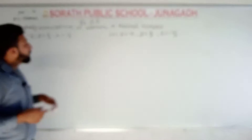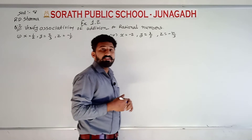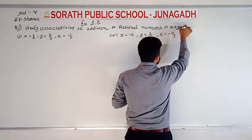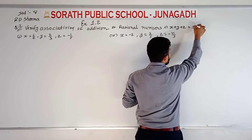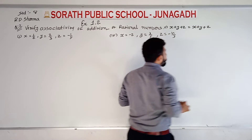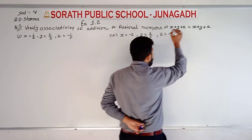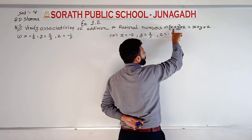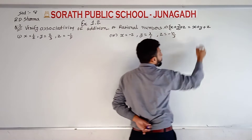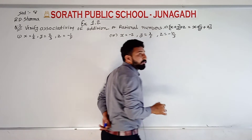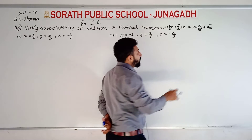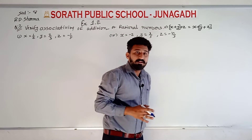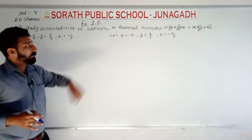Now we are verifying associativity. You know what associativity is: x plus y plus z is equal to x plus y plus z. If I take the first two terms and add their sum to the third term, it equals the sum of the last two terms added to the first term — the answer will be the same on both sides of the equal sign. So we can say that associativity is verified.